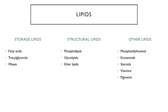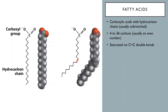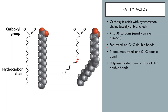A fatty acid is just a carboxylic acid that has a long chain of hydrocarbons that are usually unbranched. The chain can be from 20, 30, or 40 carbons long, and the number is usually an even number of carbons, so at least four. There are basically two types of fatty acids: saturated fatty acids have no carbon-carbon double bonds — all bonds within the molecule are single bonds — and unsaturated fatty acids have at least one double bond. A monounsaturated fatty acid contains one carbon-carbon double bond, and polyunsaturated fatty acids contain more than one.